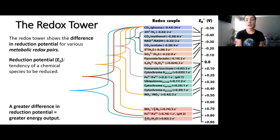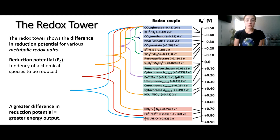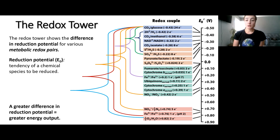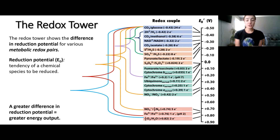On the right we have different pairs of electron donors and electron acceptors that I've paired up, because these are really common in natural environments. The electron donor is going to be the species with the lower reduction potential, so higher up on the tower. And the electron acceptor is going to be the species with the higher reduction potential, so lower on the redox tower.